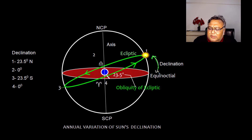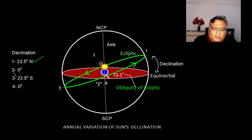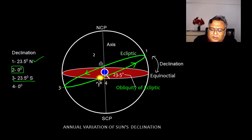Declination is the latitude projected in the sky. The declination is maximum at 23.5 degrees north, depending on the obliquity of ecliptic. As the sun moves, it crosses from north to south — at that crossing point the declination is 0. The sun then reaches 23.5 degrees south at position 3, and as it returns, the declination reduces back to 0 where the sun crosses from south to north.